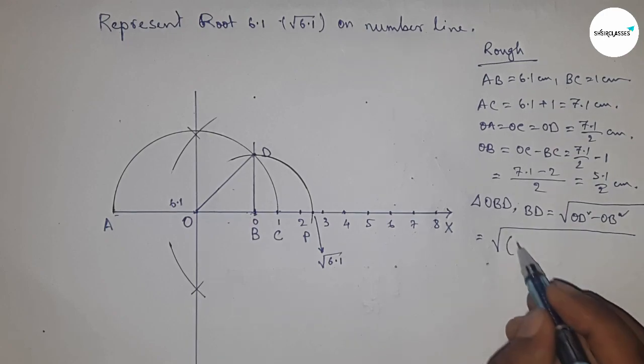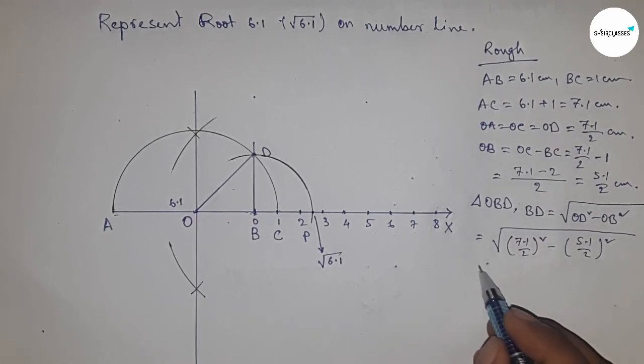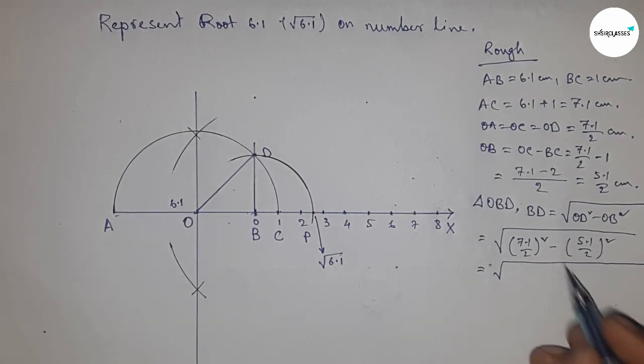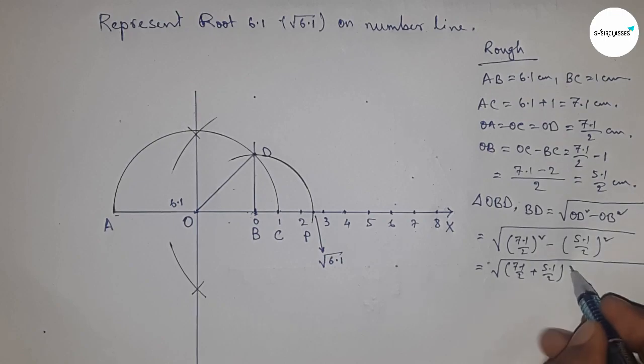Next I'm going to use the formula a squared minus b squared equals (a plus b) times (a minus b), so apply the formula here.